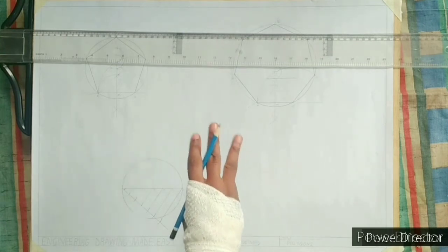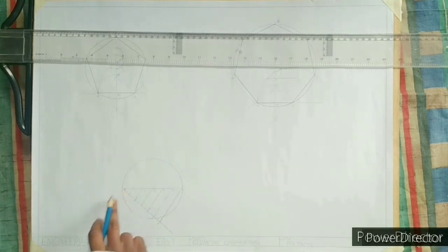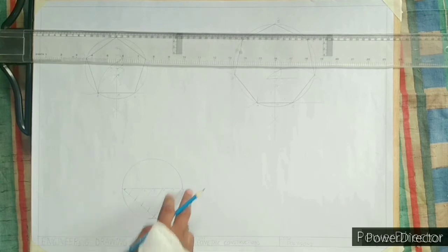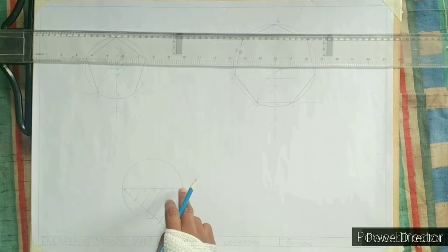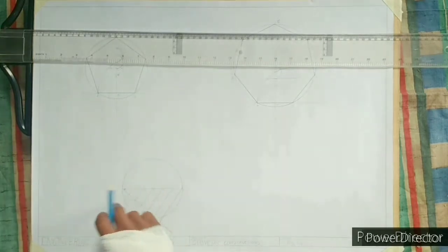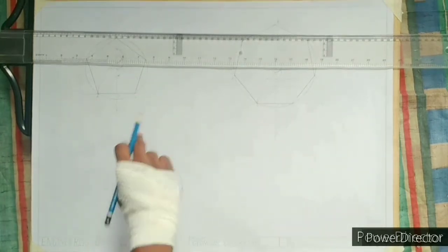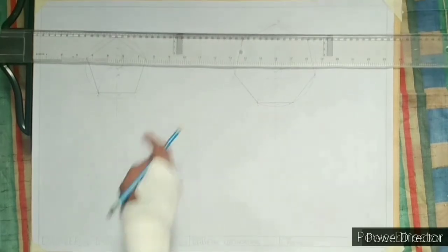Step 3, with 0 as the center and the length of line 06 as the radius, draw an arc. Then you repeat with 6 as the center and the length of line 06 as the radius such that the arcs intersect at M.